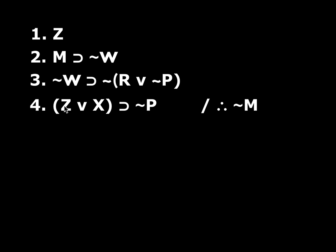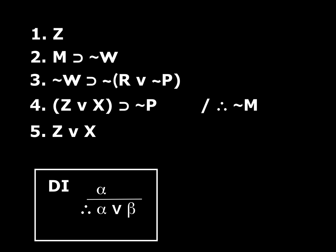Well, suppose I did have Z or X — that would be great. I don't, but suppose I could derive that somehow. Then I could do modus ponens to get not-P, and then I might be in business. How could I get Z or X? This is my wish list — it'd be great if I could get Z or X. Well, remember the rule of DI: if I have a statement, it doesn't matter what it is, I can derive a disjunction that has that statement as one disjunct and anything else I want as the other. And I do have Z up here, so DI would let me go from Z to Z or X.